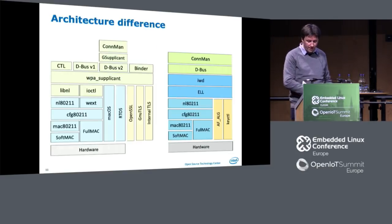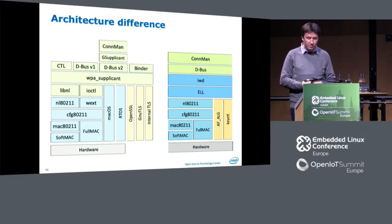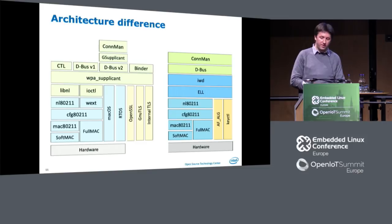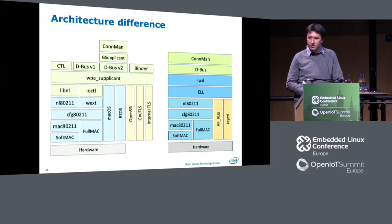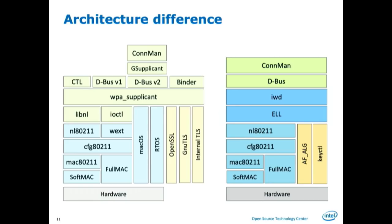We are really driving towards getting this to 1.0. The architecture: wpa_supplicant on the left side is the beast — it supports everything including the kitchen sink, with tons of options. We picked one when we did Conman: the version 2 D-Bus API, which probably needs version 3 and version 4 before it's usable. We picked libnl and netlink 802.11, cfg802.11, and either fullmac or softmac. The really bad part is we have to write this whole g-supplicant to make the D-Bus API digestible and usable and fix all the issues around it — a whole layer you'd think: why would I have to do this? With IWD we slimmed this down.